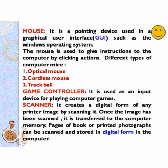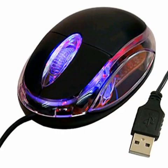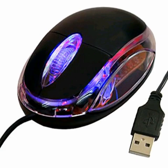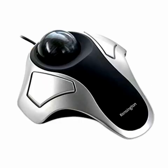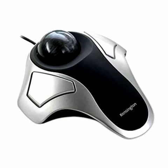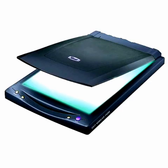The next input device is game controller. It is used as an input device for playing computer games. Next is scanner — it creates a digital form of any printed image by scanning it. Once the image has been scanned, it is transferred to the computer memory. Pages of books or printed photographs can be scanned and stored in digital form. Here we can see the optical mouse, cordless mouse, trackball, game controller, and scanner. These are all input devices.